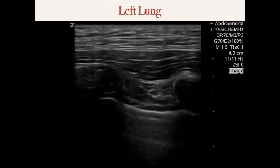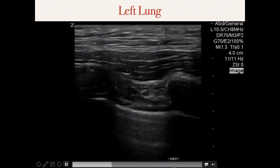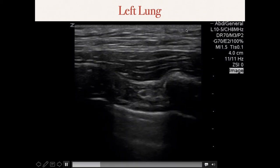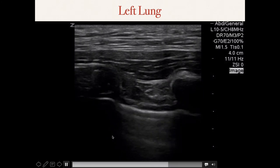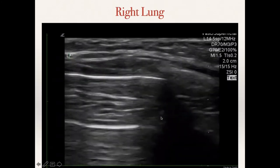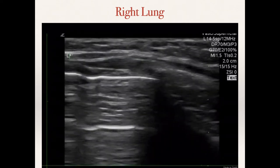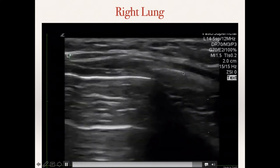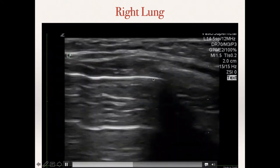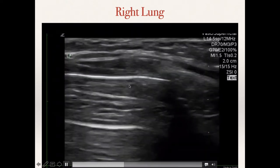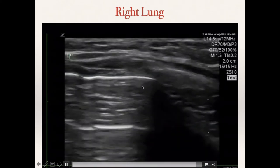Here is the left lung. We're using a linear array for really nice definition. You can see the rib shadow, intercostal muscle, the pleural line, an A-line below, and nice sliding. On the right lung, there is a rib and shadow, and it almost looks like there is pleural movement here. But if you really focus on the pleura, there is no sliding, no comet tail artifacts - just an A-line. So different than the other side.